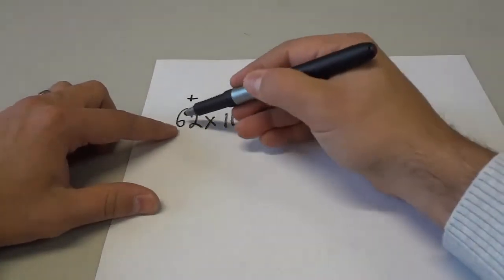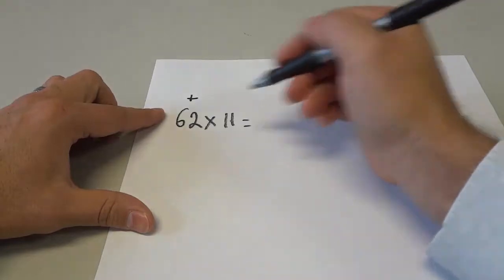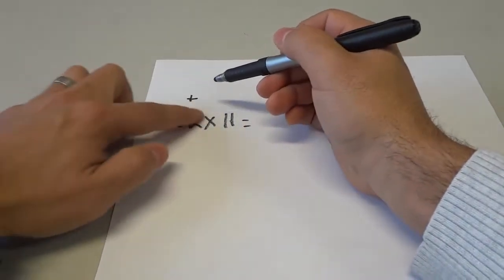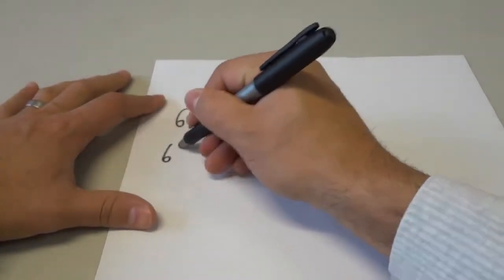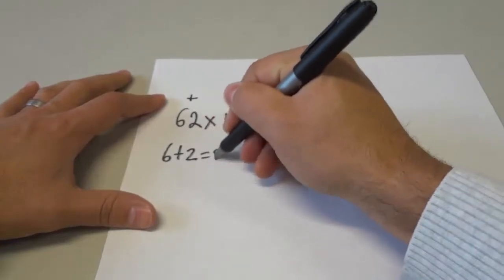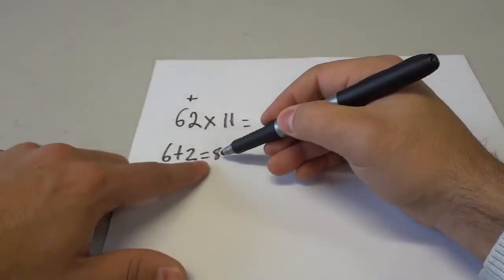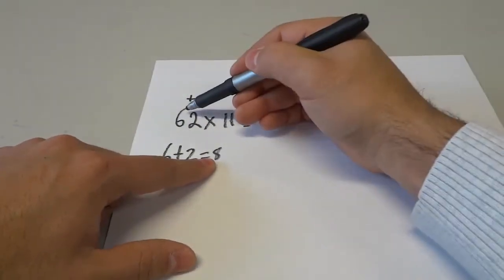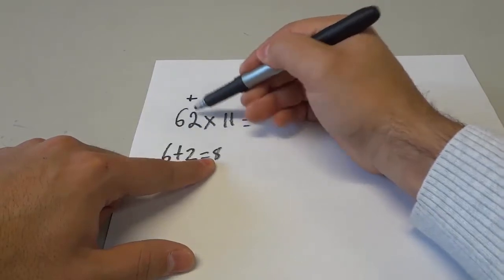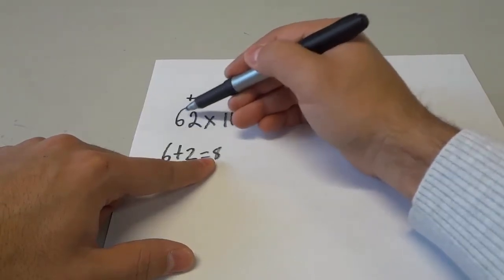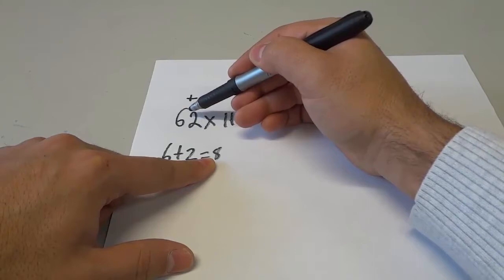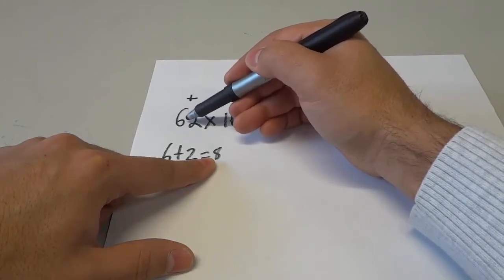So there's a plus sign, 6 plus 2 equals 8. So you take the non-11 numbers and you add them together, 6 plus 2 equals 8. Now you take your answer, and you're going to insert it in the middle of those non-11 numbers. So we have a 6 and a 2. We take the 8 and we insert it in the middle, and that's our answer.